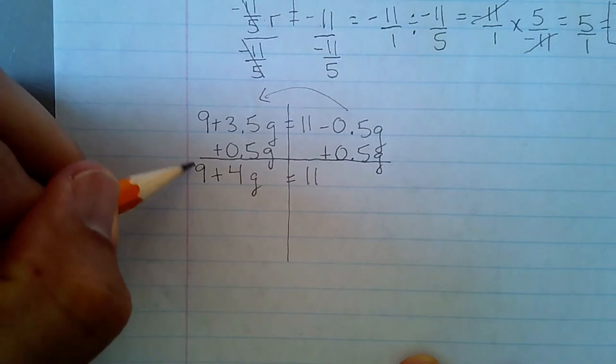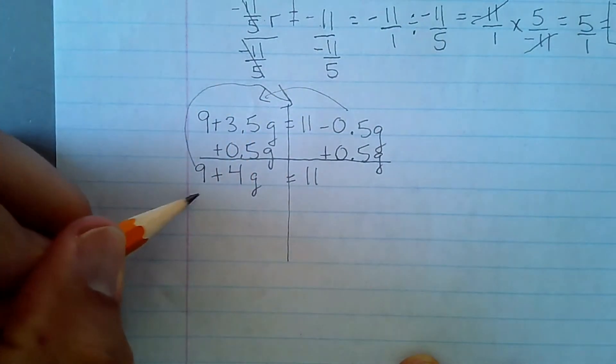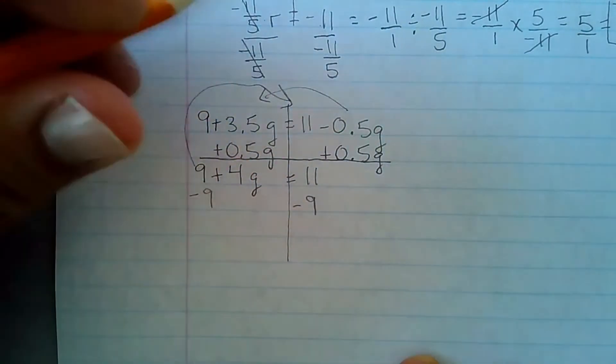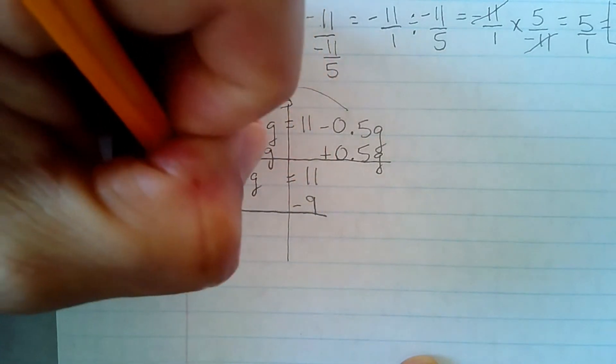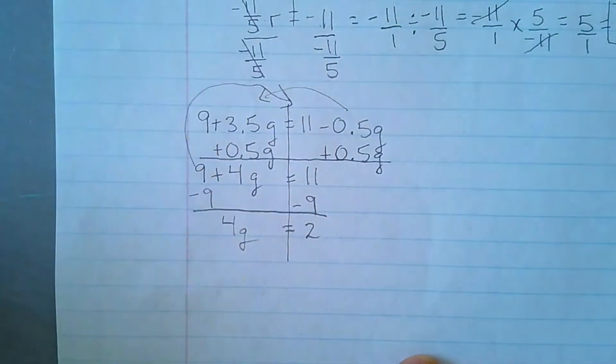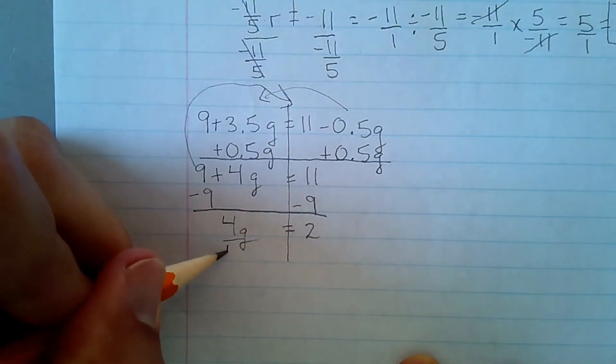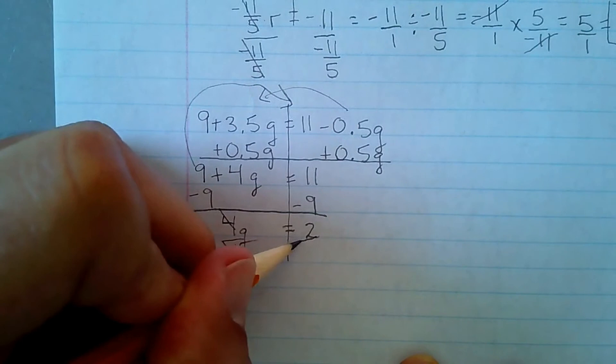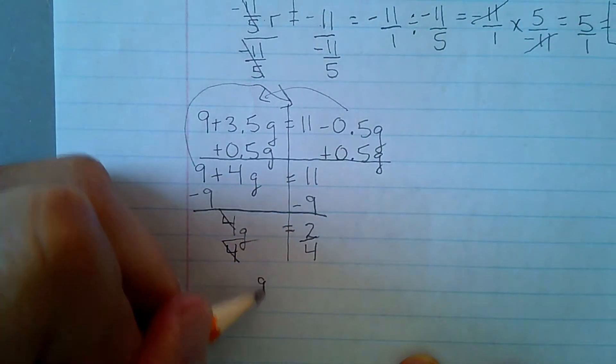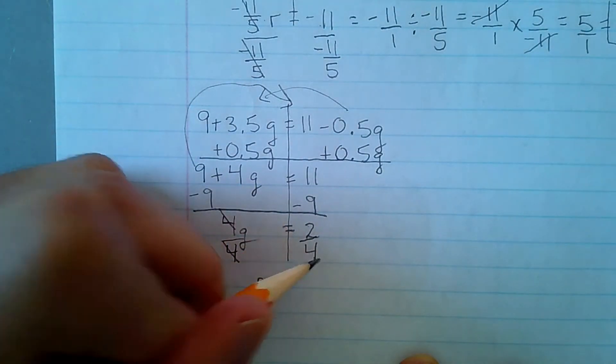Now, I'm going to bring this to the other side, but I have to subtract 9. I have 4 G equals 2. That's multiplication. You've got to divide. To get our final answer. And G is equal to 2 fourths, which is equal to 1 half.